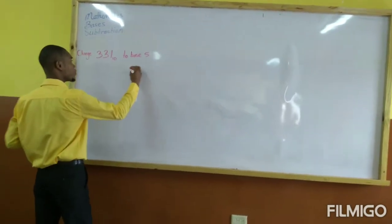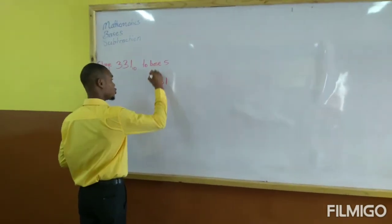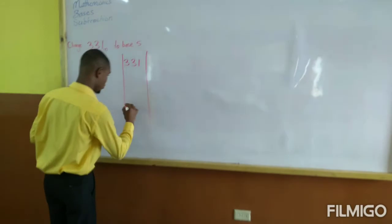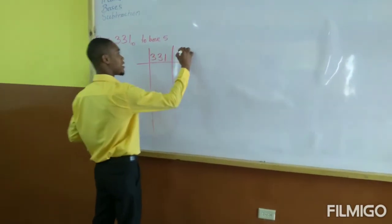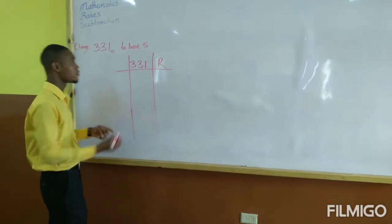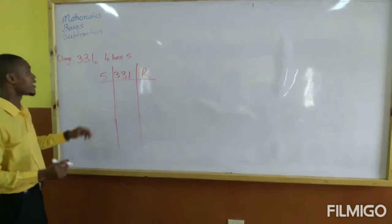What you write is you put your number that is supposed to be converted. You draw lines around it. You put the letter R here which means remainder, and you put the base that you are converting to over here. Then you start to divide.